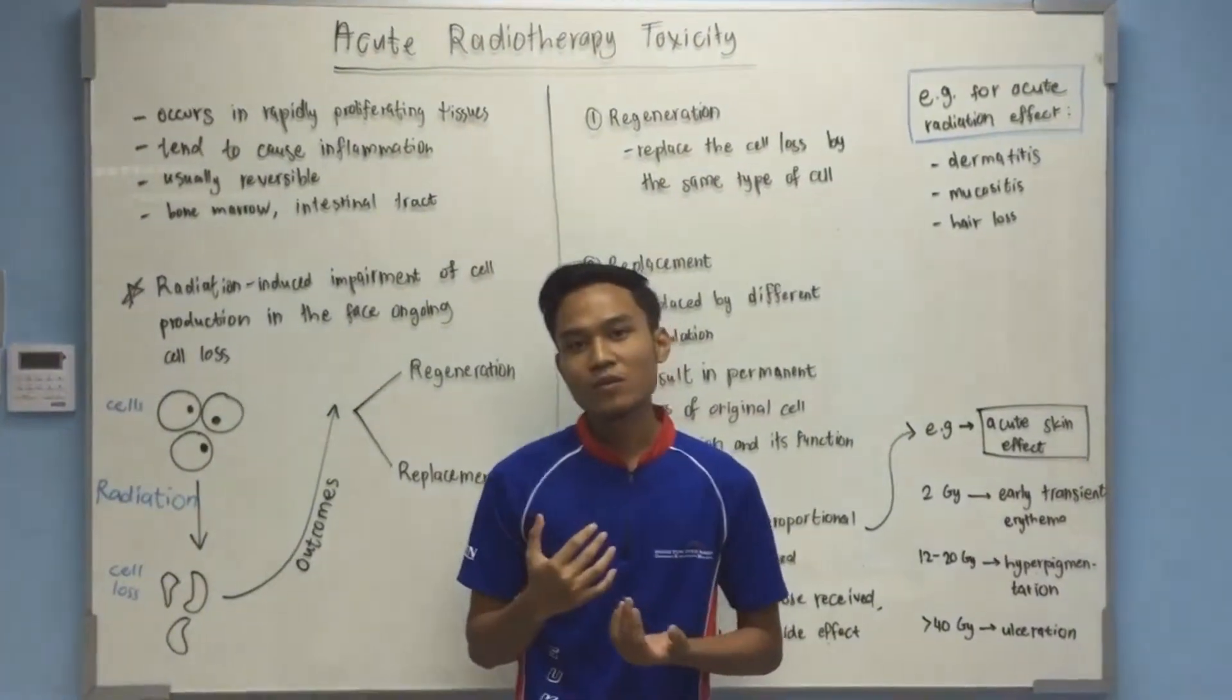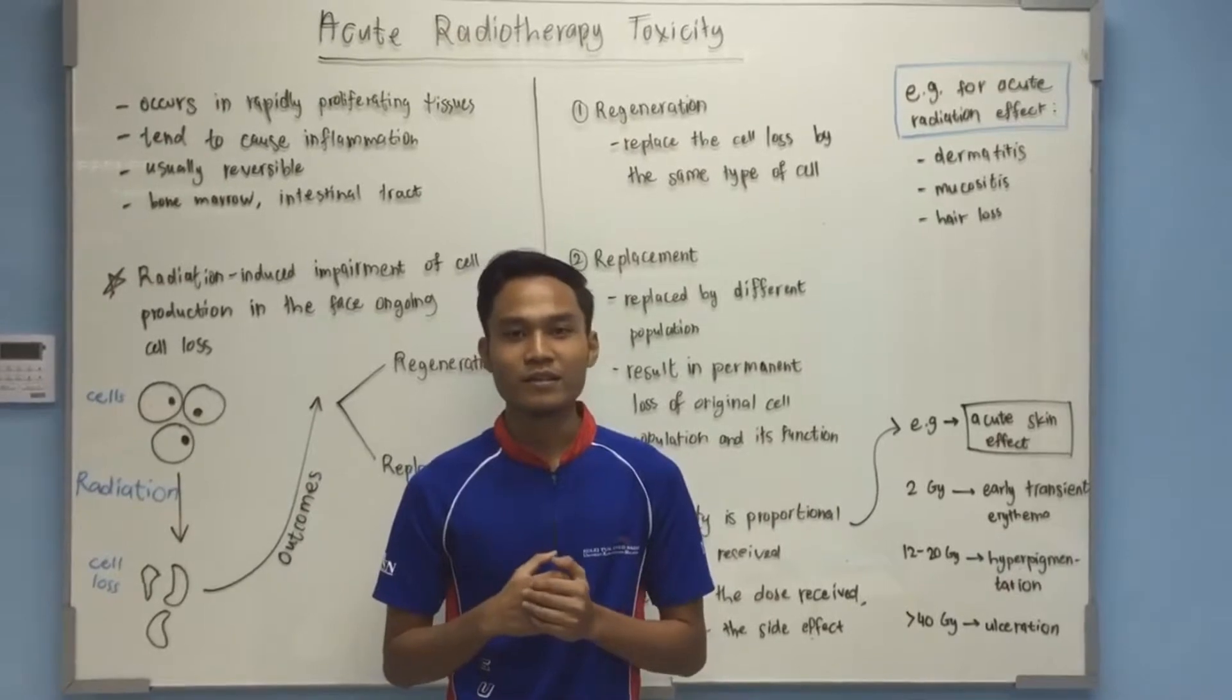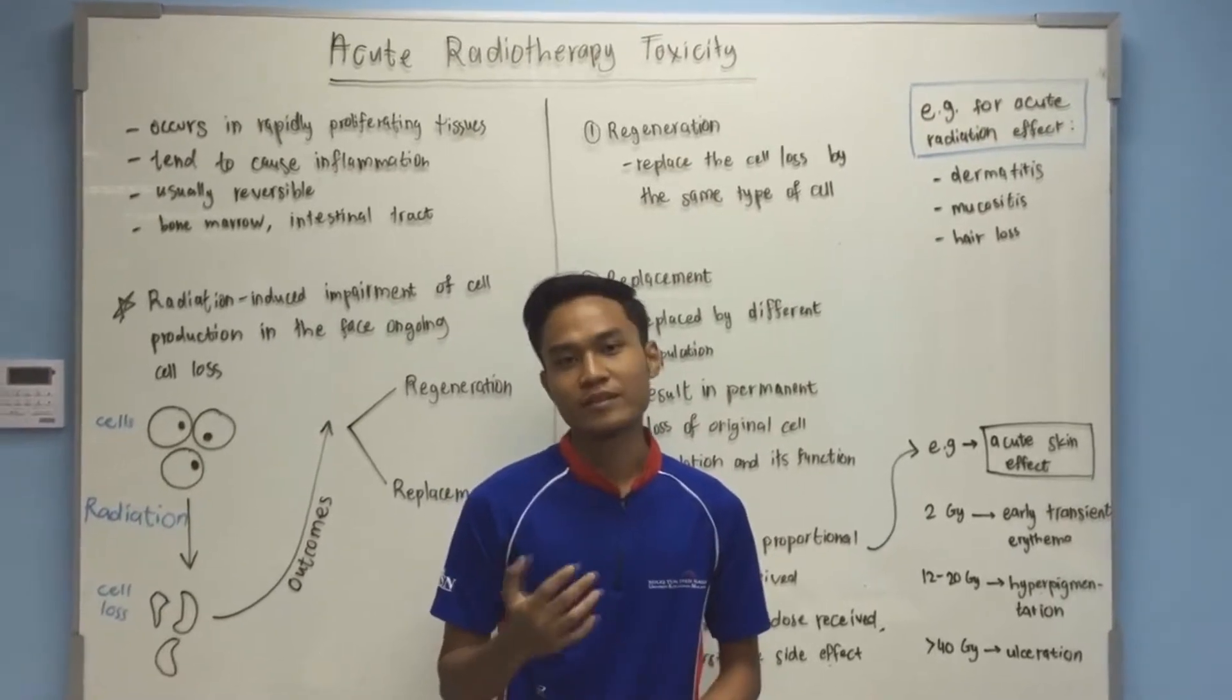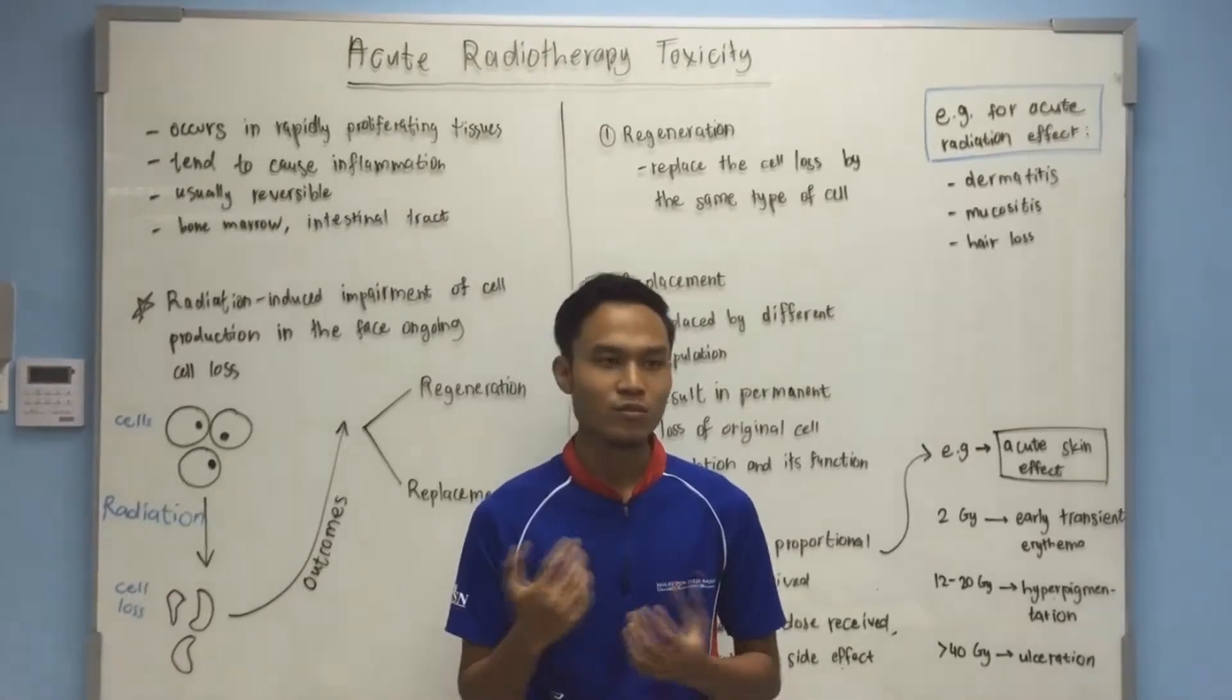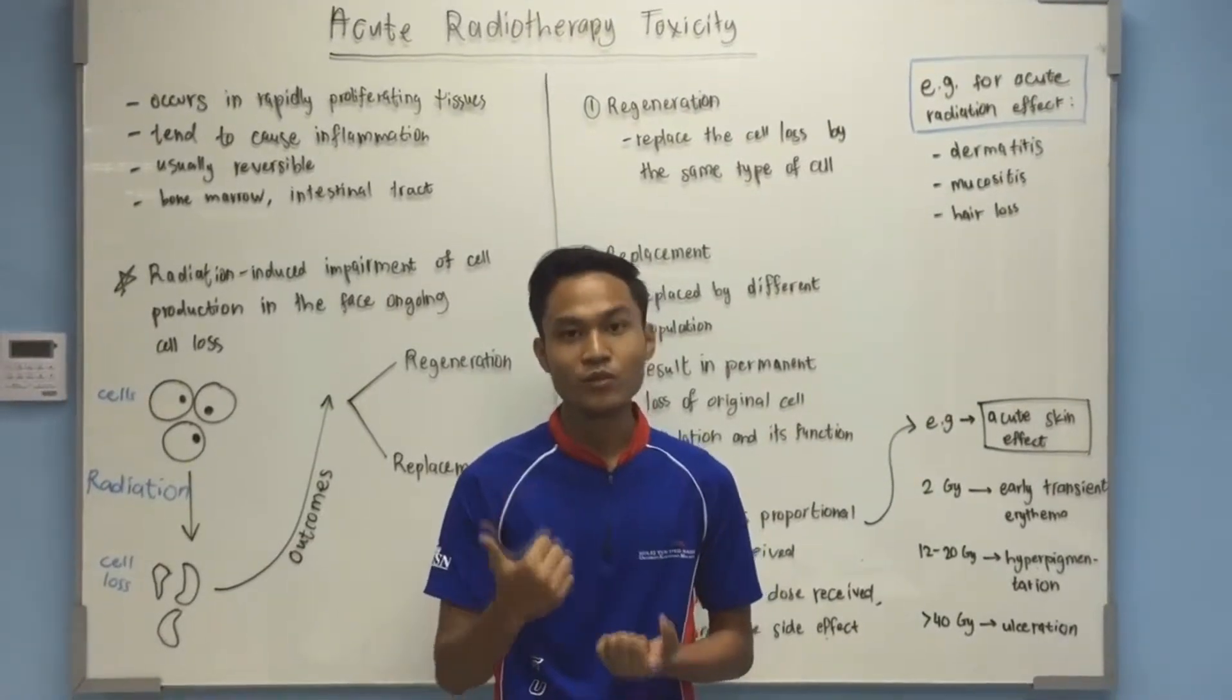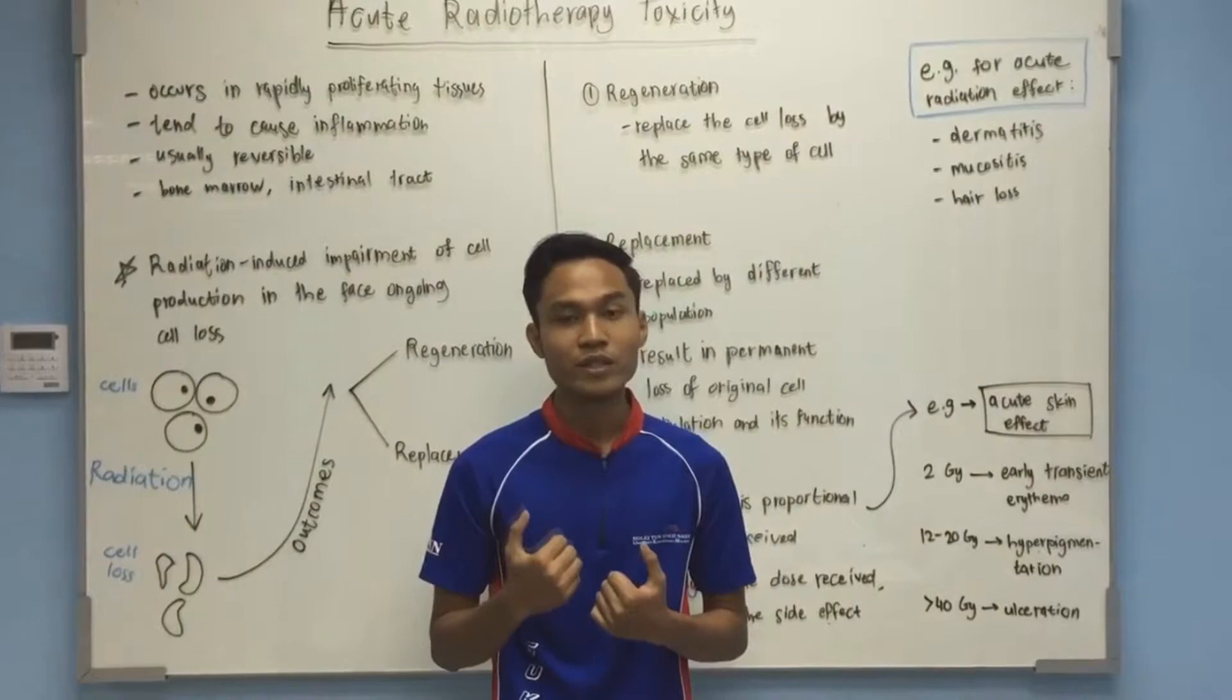As we know about radiation interaction with the cell, it has a physical phase on how the radiation penetrates the cell, then a chemical phase where radiolysis of water molecules takes place, and also the biological phase which has acute effect and late effect. Today I'm going to talk about the acute effect.